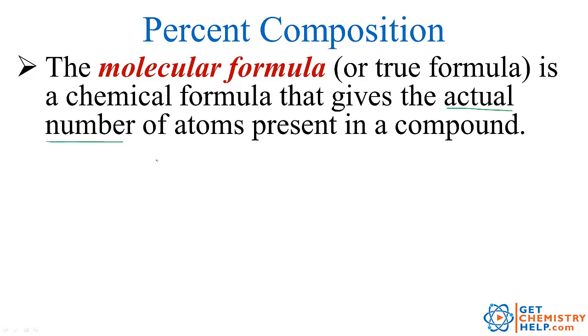So this is generally the kind of formula you're used to writing when you're naming compounds. So you might have a compound tetraphosphorus decaoxide. So that's the actual number of atoms present, 4 phosphorus and 10 oxygens.